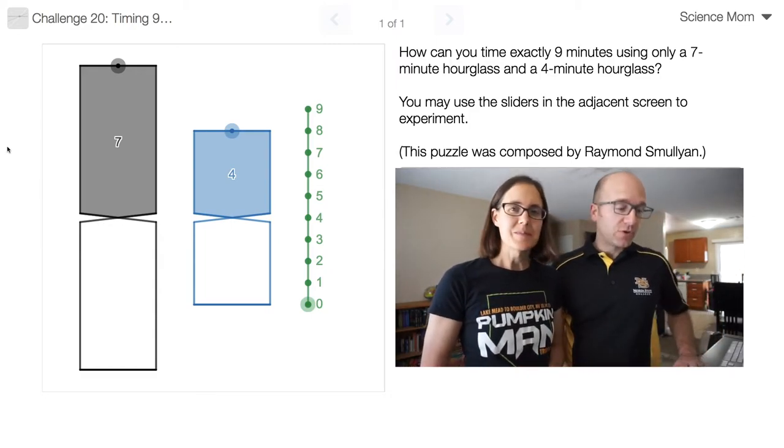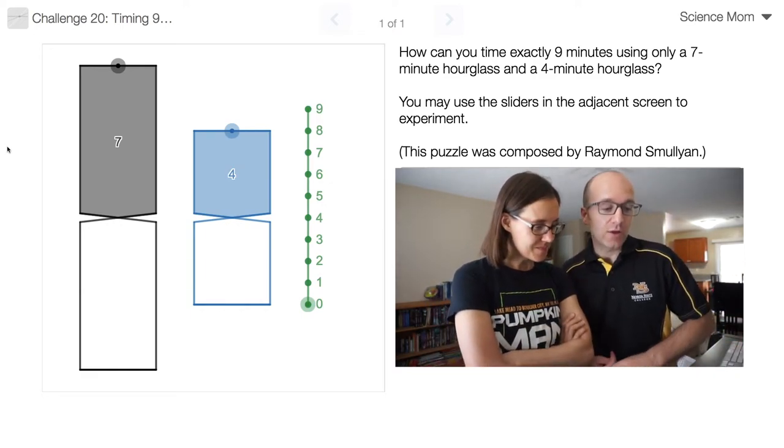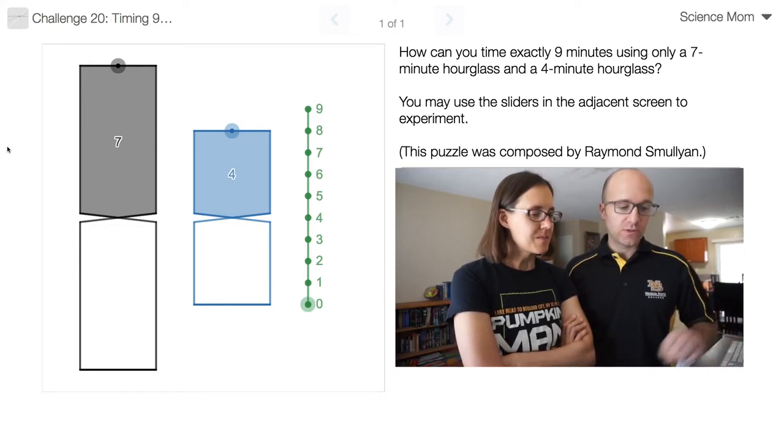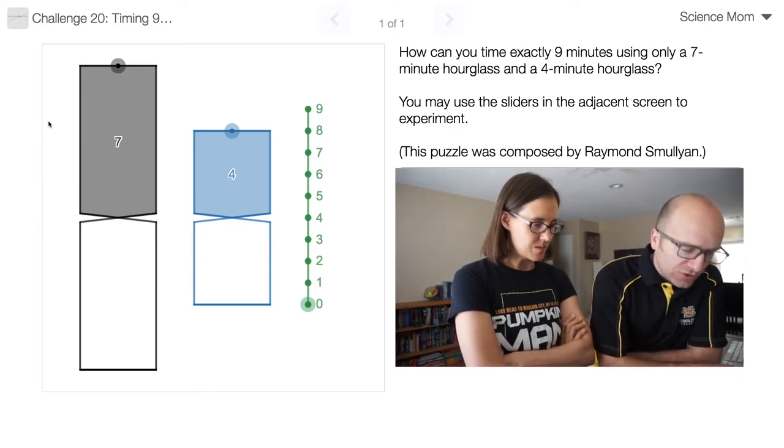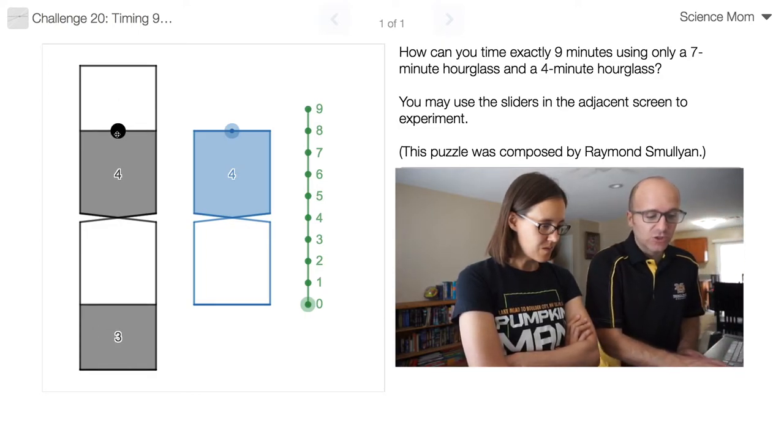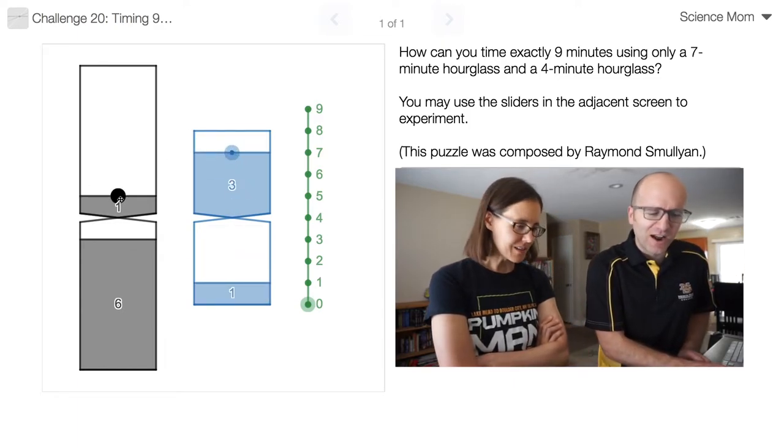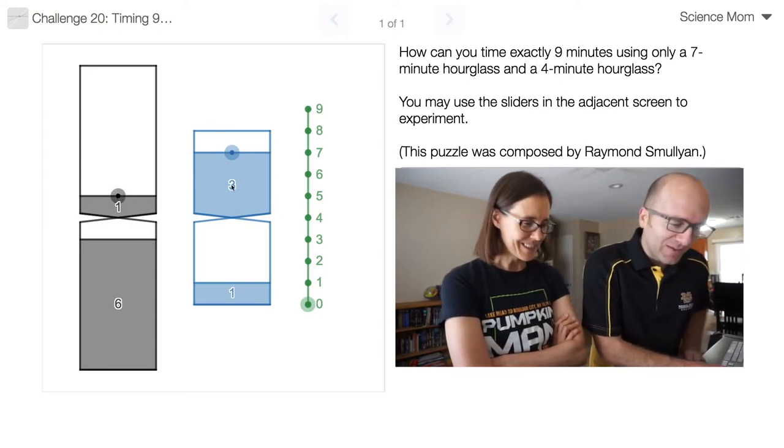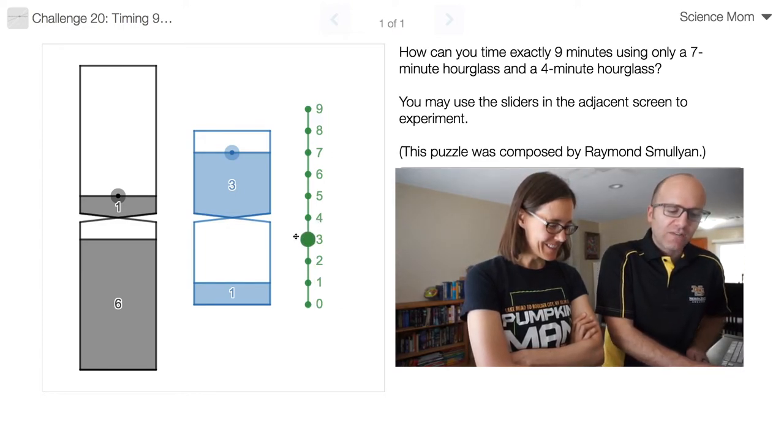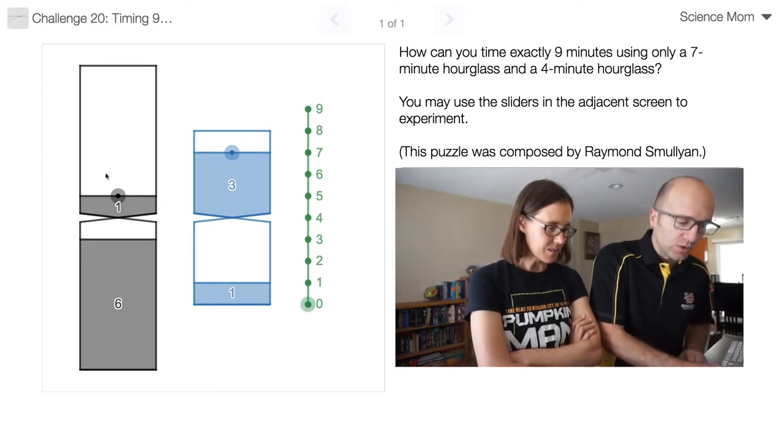This is challenge problem number 20. Here we have a 7 minute hourglass and a 4 minute hourglass. Your challenge is to time exactly 9 minutes using those two hourglasses. Let me show you what I have set up here. This is mostly just for demonstration purpose. You can drag these to show how much time or how much water or sand is in them. This is just a way of keeping track of how many minutes have elapsed. These are entirely just bookkeeping things so you can explain your thought process in a more visual way.